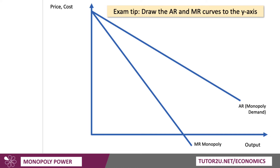Here are my monopoly demand curves. My exam tip here is to draw the average and the marginal revenue curves to the y-axis if you can, because that will help us talk about economic welfare, which is a key part of the monopoly discussion. Marginal revenue, of course, is twice the gradient — half the average revenue curve — so you have two downward sloping revenue curves there. The AR is the monopoly demand curve.